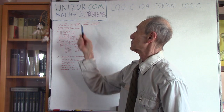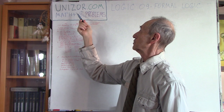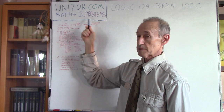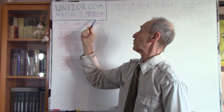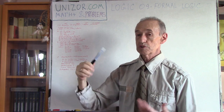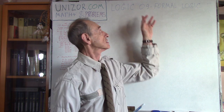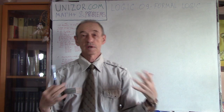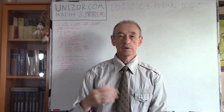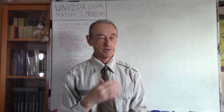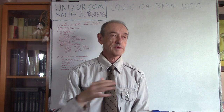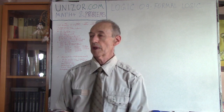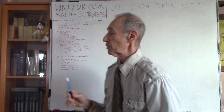To get to this lecture from unizor.com, you just choose the course, which is Math Plus and Problems, then the category, which is Logic, and within this category you will see Logic number 09, which is formal logic problems, which I will present right now. Before presenting the problems, I will just talk about logic a little bit. First of all, symbolics.